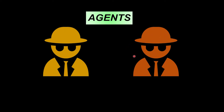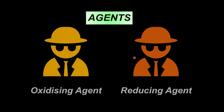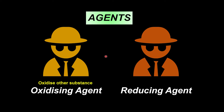Let me introduce you to two of these agents. Their names are oxidizing agents and reducing agents. Just by looking at their names, I believe you can guess what they do. An oxidizing agent will help us to oxidize other substances — in other words, it will cause the other substance to undergo oxidation. And itself, it undergoes reduction.